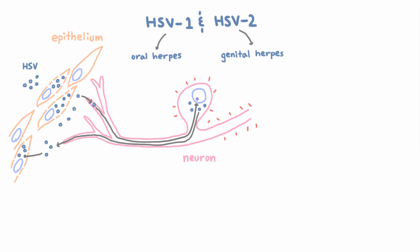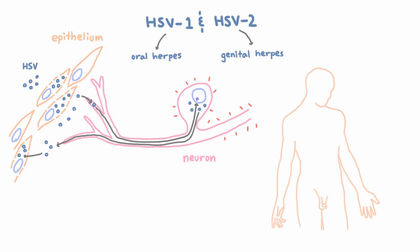So now the big question: why is HSV1 usually oral and HSV2 usually genital? It turns out HSV1 is good at establishing latent infection in the trigeminal ganglia, while HSV2 prefers the sacral ganglia, which innervate the genitals.